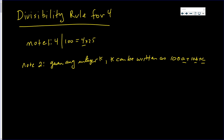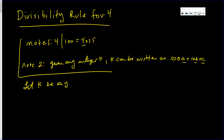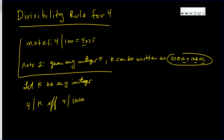So now with our two notes we can get on with this. Let k be any integer. Four divides k if and only if four divides one hundred a plus ten b plus c. We're saying that k can be written this way. Now, if four divides one hundred, then four divides any multiple of one hundred.